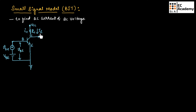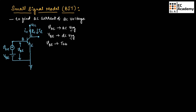In the same way, capital IC represents the DC signal, small IC represents the AC signal, and small I capital C represents the total current. There are basically three types of voltages: small VBE which is AC voltage, capital VBE which is DC voltage, and small V capital BE which is the total voltage.